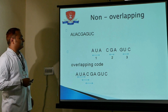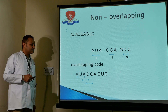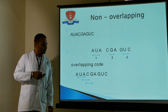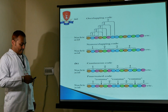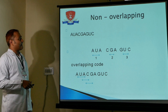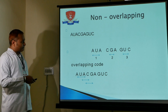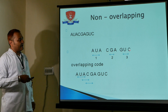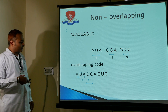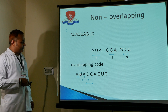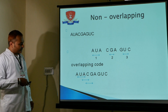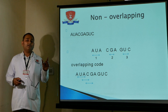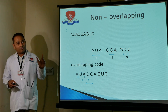Non-overlapping means codons are continuous and not overlapping. For example: AUG is first, CCU is second, GUC is third — there is no overlapping. It is always a clean set of three bases at a time, with no shared bases between adjacent codons.